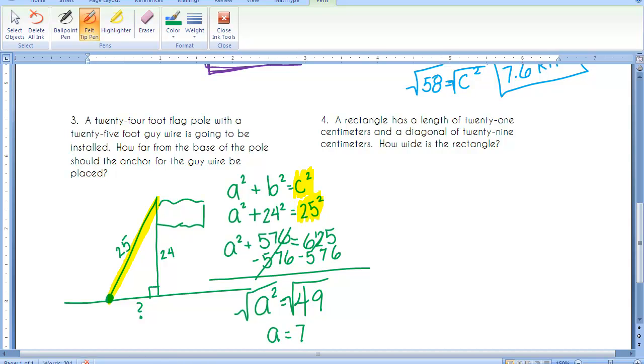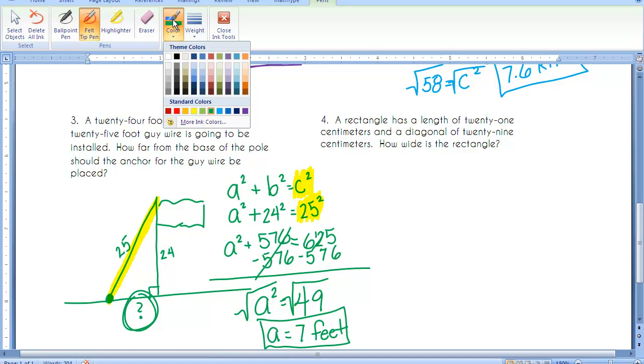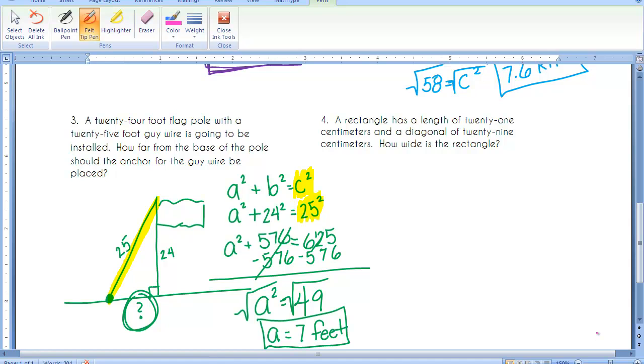And again, it is a word problem. So the answer is going to be 7 feet. So that part right there, the anchor would be placed 7 feet away from the flagpole. And we have one more problem. Let's take a look at this.